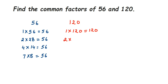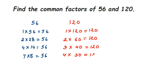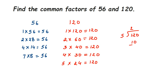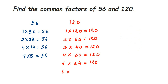Since 120 is an even number, it goes in the 2 times table: 2 × 60 = 120. Next, 3: 3 × 40 = 120. Next, 4: 4 × 30 = 120. The number ends in 0, so it goes in the 5 times table: 5 × 24 = 120. And for 6: 6 × 20 = 120.